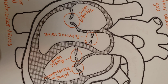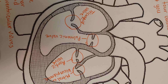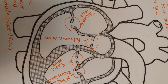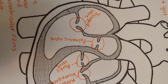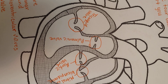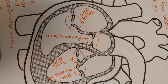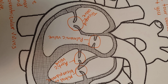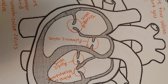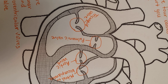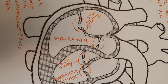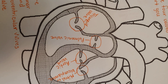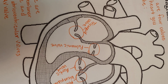Between S1 and S2, the heartbeat expels its blood, which is called systole — that is the top number of your blood pressure. Between S2 and the next S1, the heart rests and fills with blood, which is called diastole — that is the bottom number of your blood pressure.